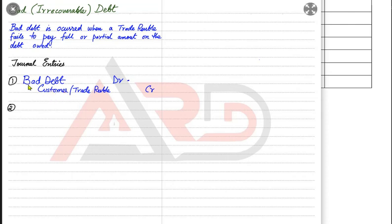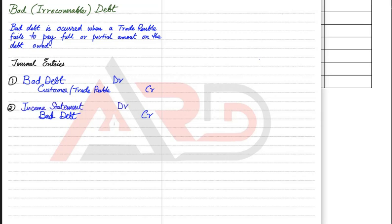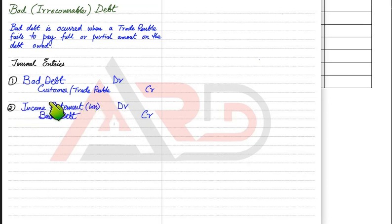At the end of the year, the bad debt account contains all debts that turned bad during that year. The bad debt account, which has a debit balance, needs to be credited to close it, and its total is transferred to the income statement — because it is a loss for the business. All expense accounts are closed at year-end and transferred to the income statement. If the income statement is debited, it represents an expense or loss; if credited, it represents a gain or income.